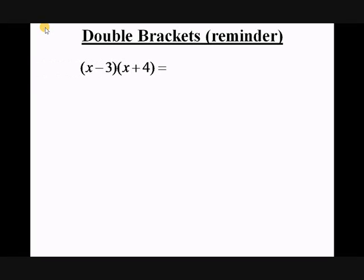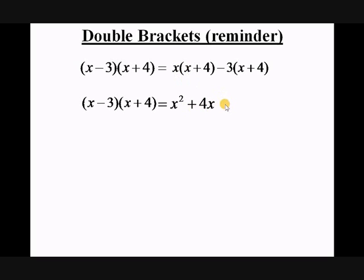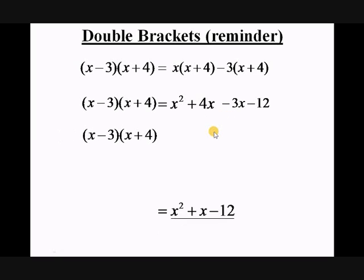Consider the following expression. If we multiply this out, we're going to get x times the bracket (x + 4), minus 3 times the bracket (x + 4). When we multiply those out we get x² + 4x − 3x − 12, because minus 3 times plus 4 is minus 12. Simplifying those two terms gives x² + x − 12.